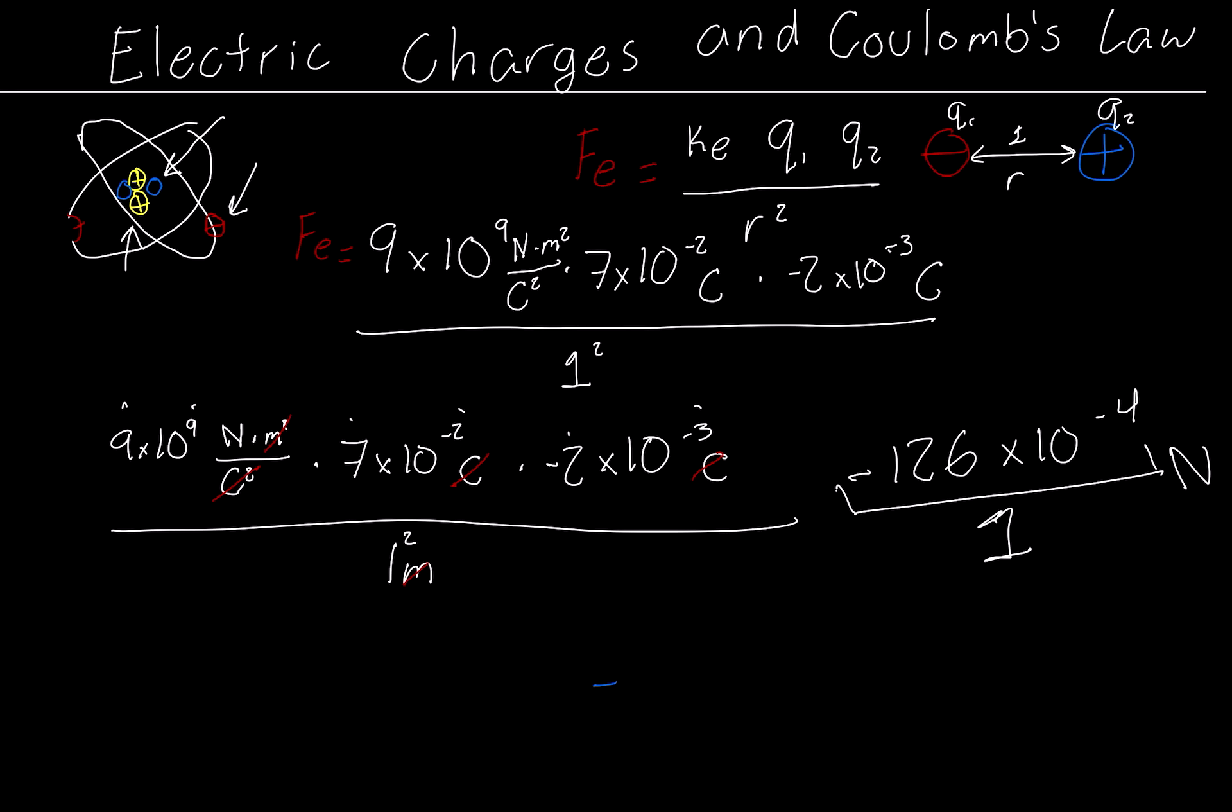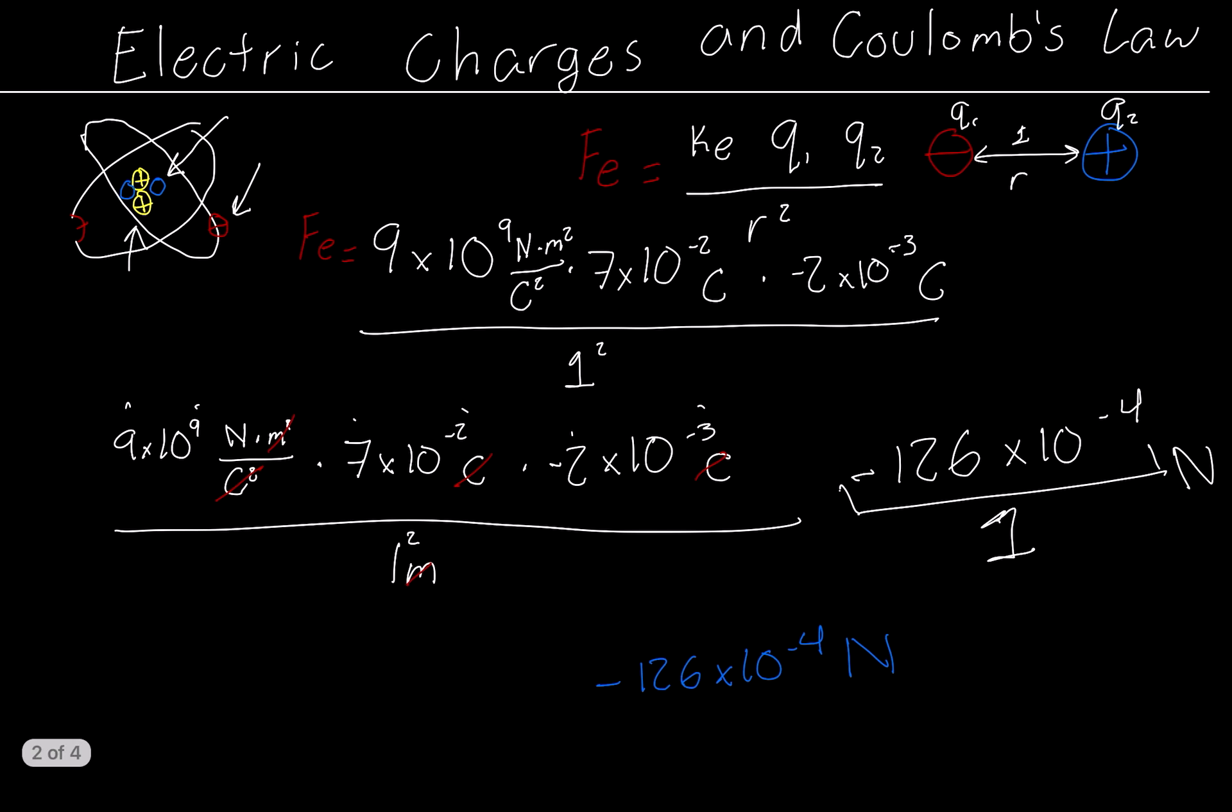So it would be negative 126 times 10 to the negative 4 Newtons. And what the negative sign also indicates is the direction. So due to the fact that it's an electron and a proton, that means that they attract each other. So that's what the negative sign indicates. Now, if this were to be an electron and an electron or a proton and a proton, that would end up in a positive answer. And that would mean that they repel each other.